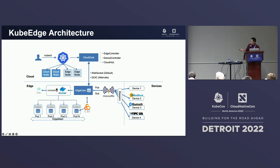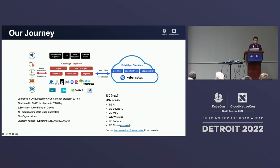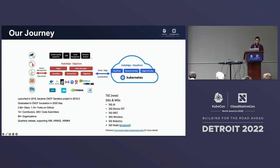I want to move quickly since we've talked about the architecture before — I'll spend more time on our updates. A quick update on our journey: we launched this project in 2018 and donated it to CNCF, becoming a sandbox project in March 2019. We graduated to incubation in September 2020. Currently, we have more than 5,800 stars, almost 2,000 forks. We have more than 1,000 contributors, and we do quarterly releases. We support not only x86 but also ARM 32 and ARM 64.